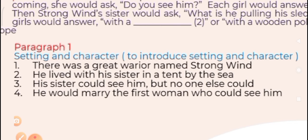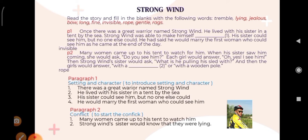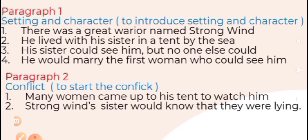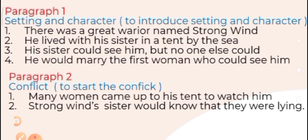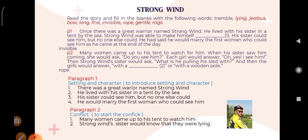'His sister could see him, but no one else could' — ya, ini menunjukkan kalau kakak perempuannya mempunyai karakter. And then 'He would marry the first woman who could see him' — ini juga masih karakter dari Strong Wind. And then second paragraph — second paragraph itu sudah mulai konflik, to start konflik. 'Many women came up to his tent toward him' — nah, di sini mulai ada komplikasi atau konflik.